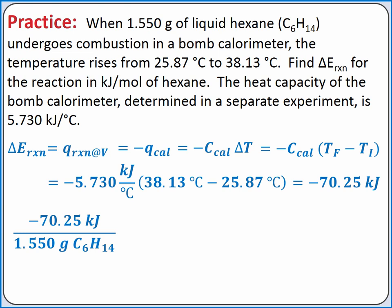We can convert from grams of hexane to moles of hexane using the molar mass of hexane. One mole of hexane is 86.172 grams of hexane. Since we want to cancel out units of grams of hexane, which are initially in the denominator, we need to put grams of hexane in the numerator in our conversion factor. Completing this calculation, we should get negative 3906 kilojoules per mole of hexane.